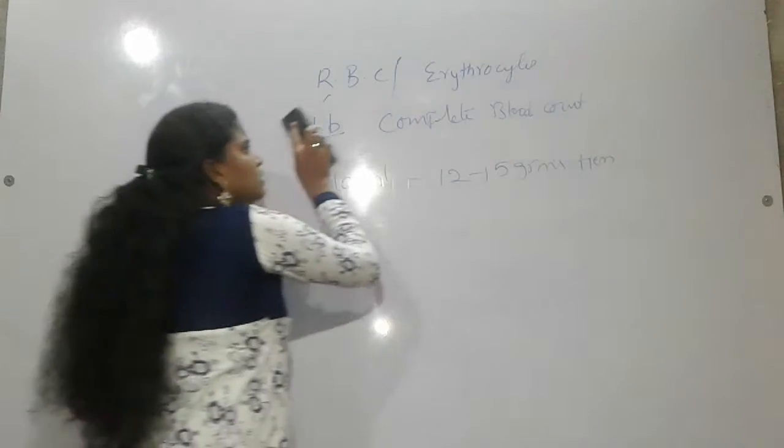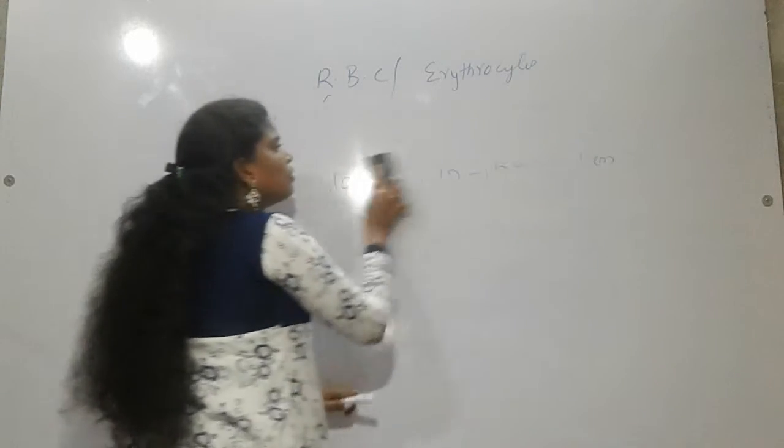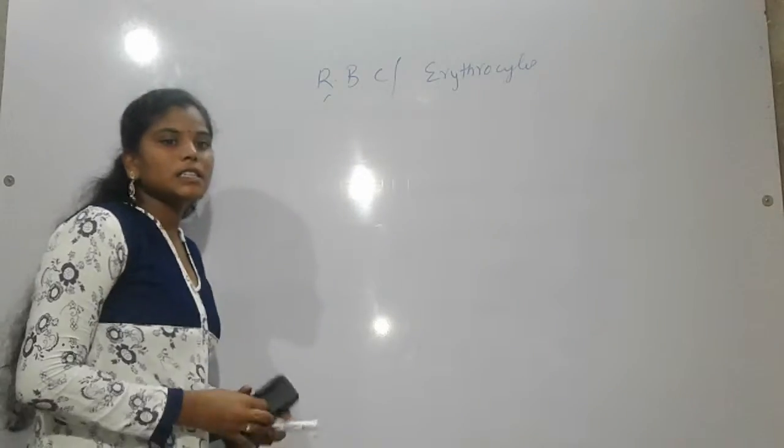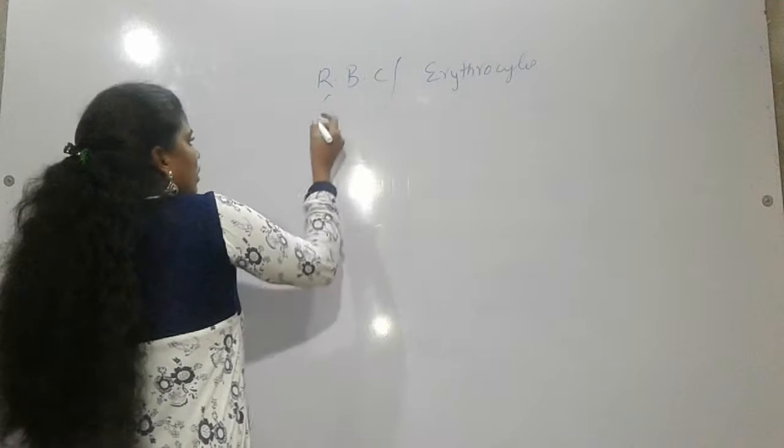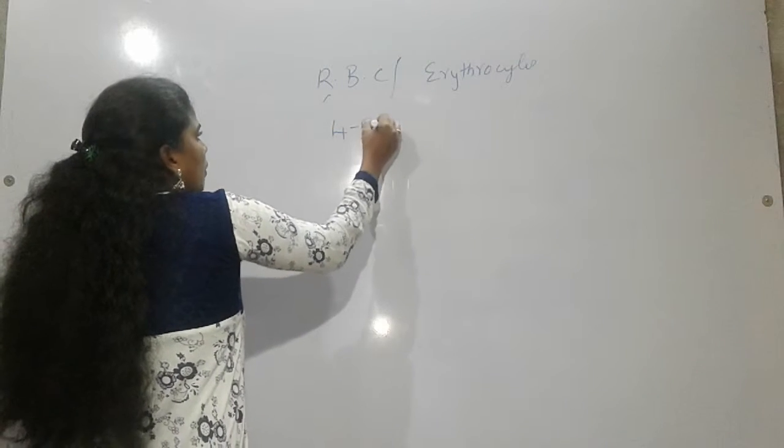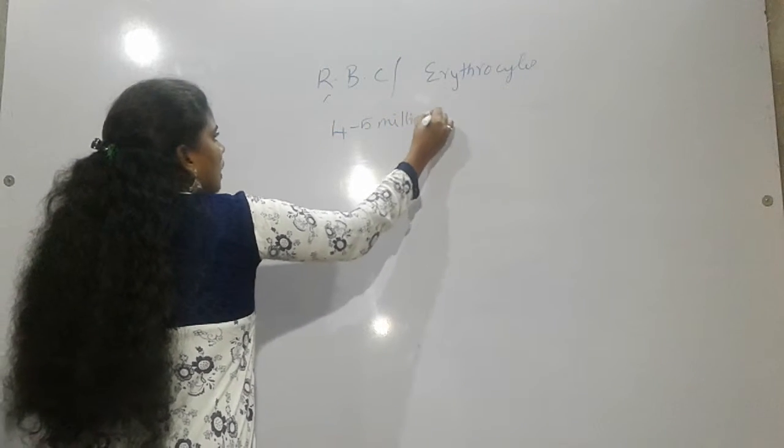Abnormal increase or abnormal decrease of... Normal level of RBC in our blood? The normal level is in 1 cubic ml, 4 to 5 million RBC.